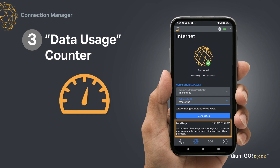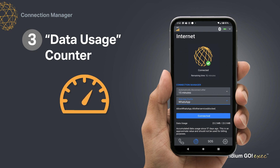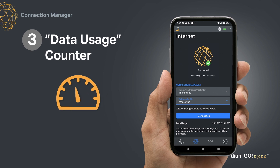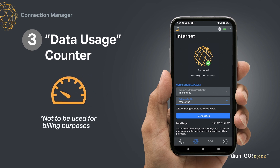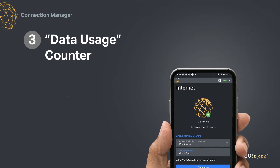Data usage shows you how much satellite data you've sent and received. Your total data usage would be a sum of both. You can reset the counter from the Settings menu on the Iridium Go Exec device or in the app. Please note, this is only meant to inform you of your approximate data usage. It is not to be used for billing purposes.